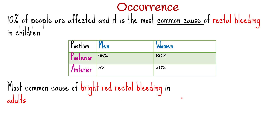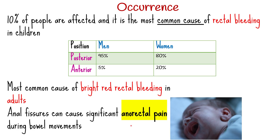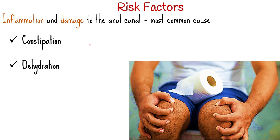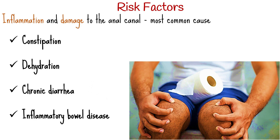These minor tears, together with any associated superficial infection, can cause significant anorectal pain during bowel movements if they are not detected and treated soon. The most common cause of anal fissures is inflammation and damage to the anal canal, and the main risk factors are constipation, dehydration, chronic diarrhea, and inflammatory bowel disease.